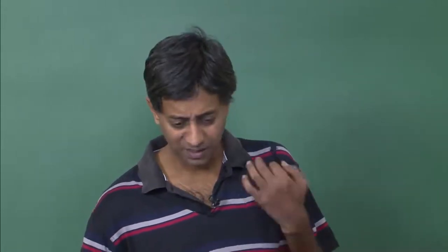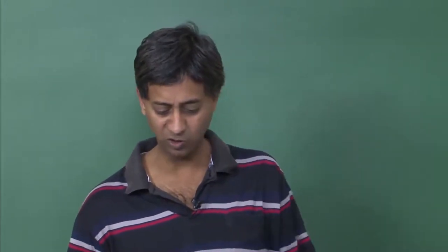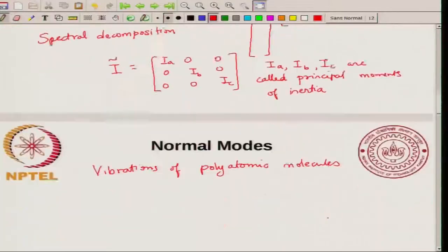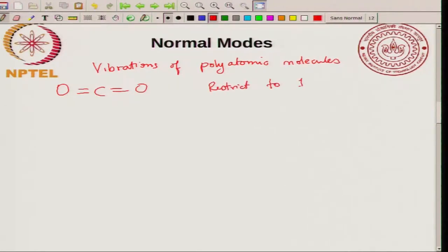Now we are doing a very similar thing but for vibrations. For vibrations of polyatomic molecules, what you have are what are called normal modes. Let us take a very simple example — a CO2 molecule. It is a linear molecule and we will just restrict to one dimension. That means you just have three coordinates: X1 for the first atom, X2 for the second, X3 for the third.